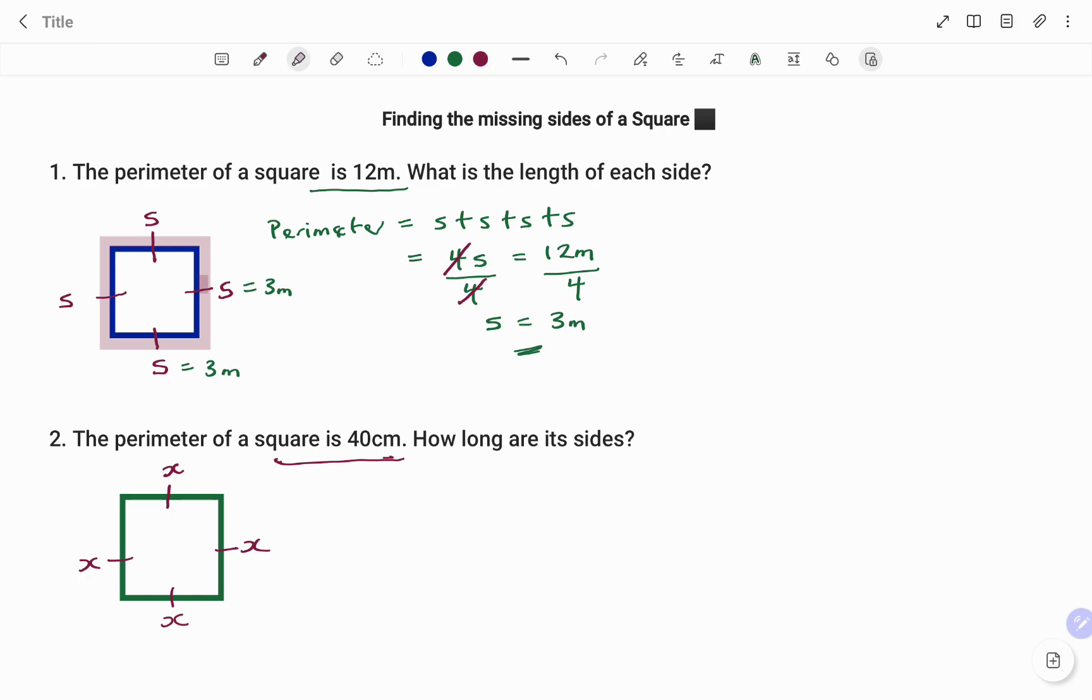The perimeter is the total length around the square, as shown, such that if I'm to find the perimeter of this square, it will be X plus X plus X plus